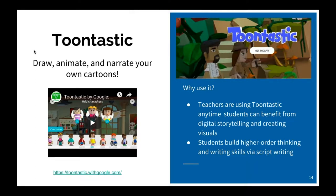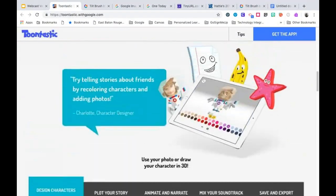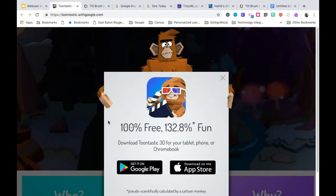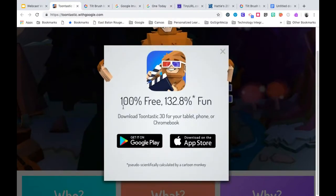Along the same lines as Tilt Brush is a tool called Toontastic — a mobile app that allows students to draw, animate, and narrate cartoons. It's a free app. Teachers are using Toontastic for digital storytelling, creation of visuals, and building writing skills. In social studies, students can draw, animate, and narrate historical characters; in ELA, they could do the same for story characters. Students are building higher order thinking while enhancing writing skills and going through the design process all at the same time.